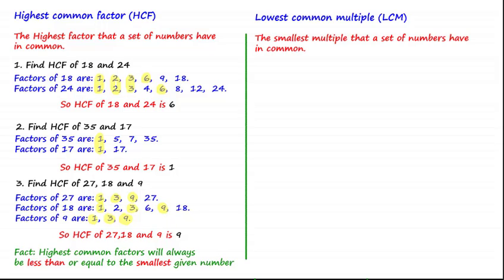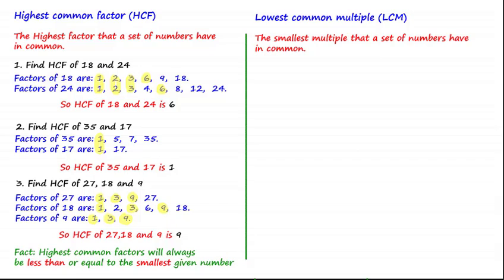Let's now look at the lowest common multiple. The lowest common multiple, otherwise known as the least common multiple, is the smallest multiple that a set of numbers have in common. If you are given a set of numbers, you find their multiples and find the first, or lowest, common multiple you see between the numbers.